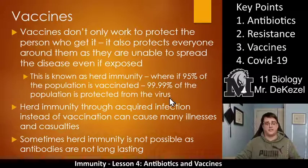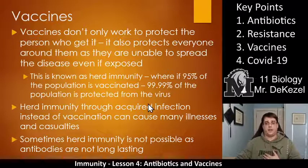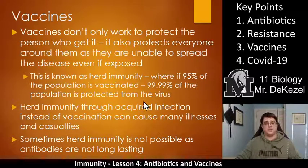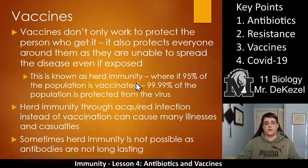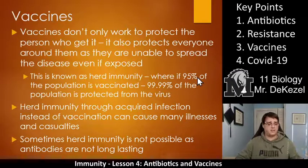Vaccines don't only work to protect the person who gets it. If I get the vaccine, it not only protects me, but it protects everyone around me as I am not able to spread it anymore. If I am protected from it, I cannot carry it from the store where I acquired it to the place where I give it to you. So it protects not only myself but everyone around, as they are unable to spread the disease even if exposed. This is known as herd immunity — where if 95% of the population is vaccinated, then 99.99% of the population is protected from the virus.